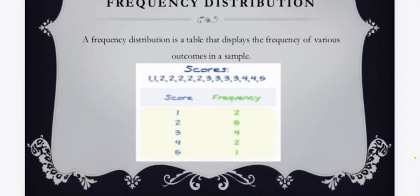So 1 repeats 2 times, 2 repeats 5 times, 3 repeats 4 times, 4 repeats 2 times and 5 repeats 1 time. So this is the frequency of various scores given in the question.